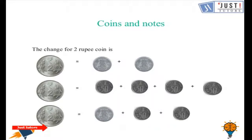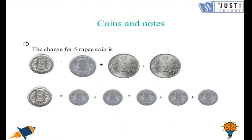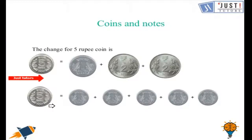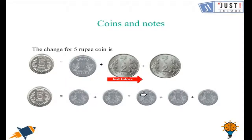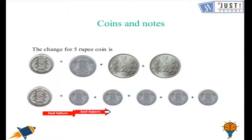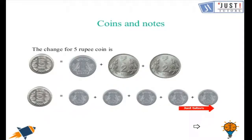Now let's move ahead and learn about the change for a 5 rupee coin. For a 5 rupee coin we can have 1 coin of 1 rupee and 2 coins of 2 rupees, which makes 5 rupees. Or we can also have 5 coins of 1 rupee each.